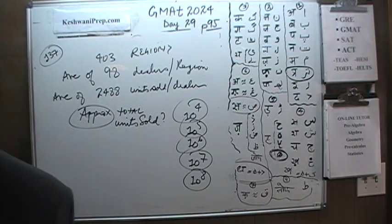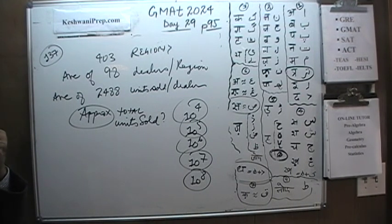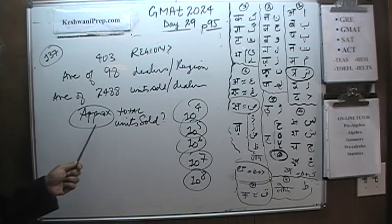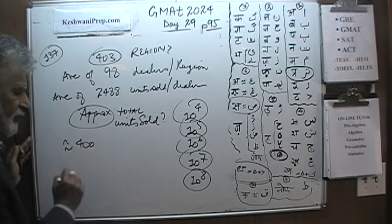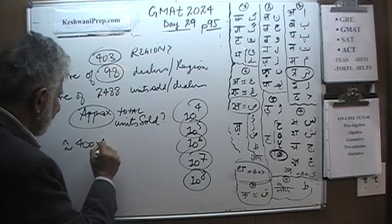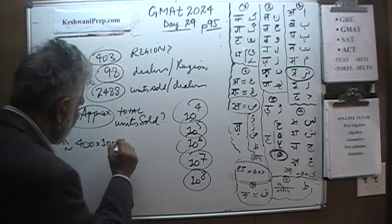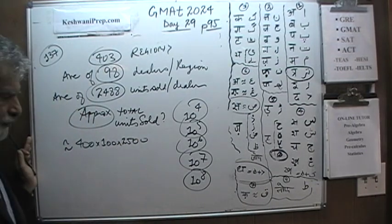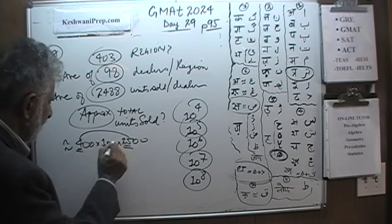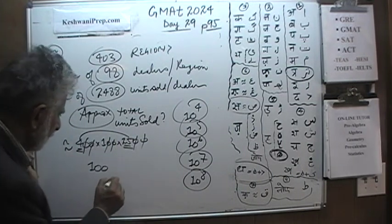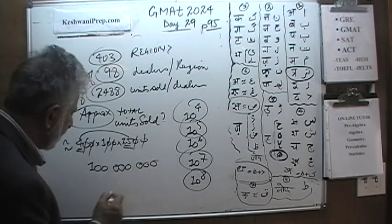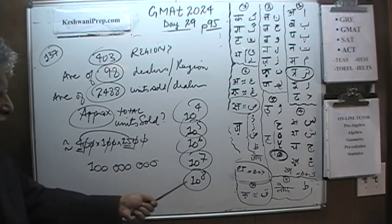Since they are asking for approximate, that is exactly what we do. We take 403 and pretend it is 400, take 98 and pretend it is 100, and take 2,488 and pretend it is 2,500. So we have 4 times 25 equals 100. Now we count our zeros: there are six zeros total, plus the 100 gives us two more — so the answer is 10 raised to the 8th power.